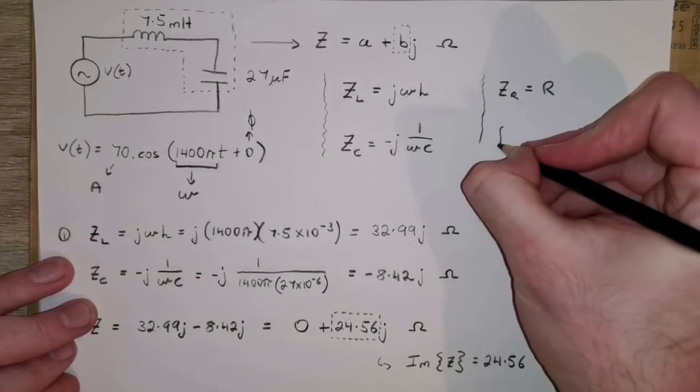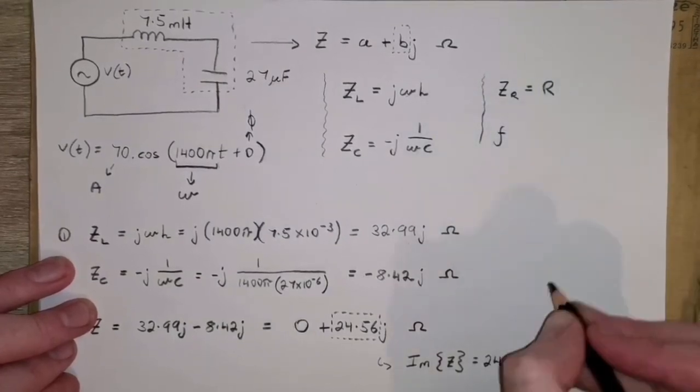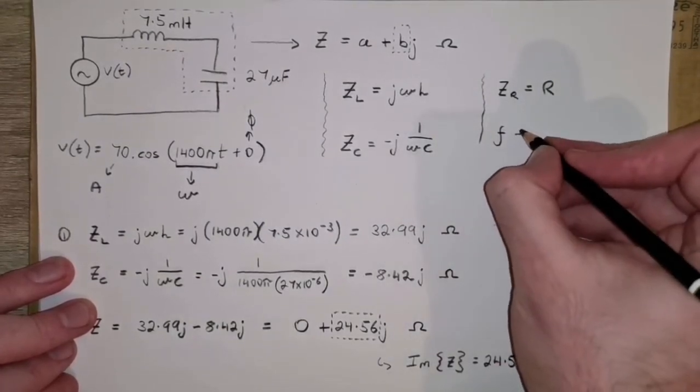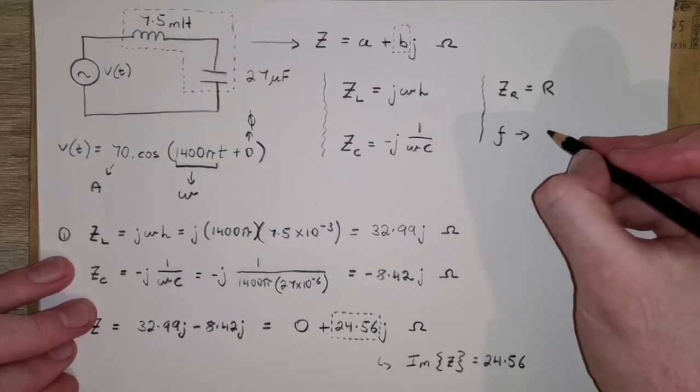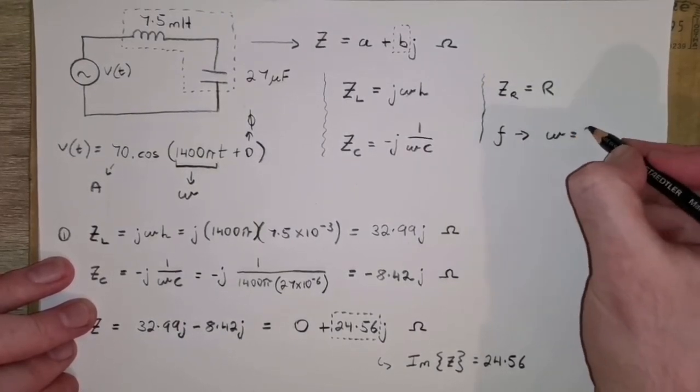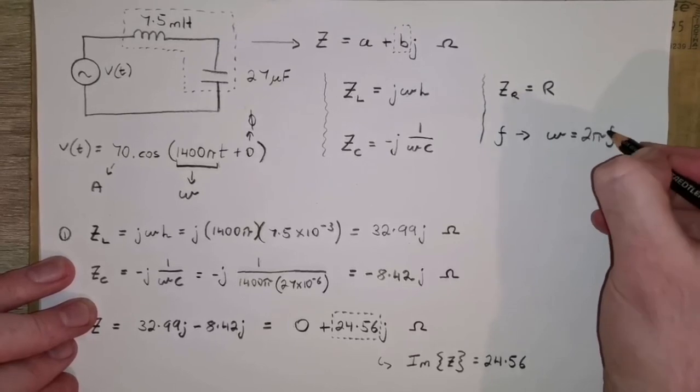Alternatively, sometimes you could be asked, given the frequency in Hertz, if you want to get the frequency in radians per second, you just multiply that by 2pi.